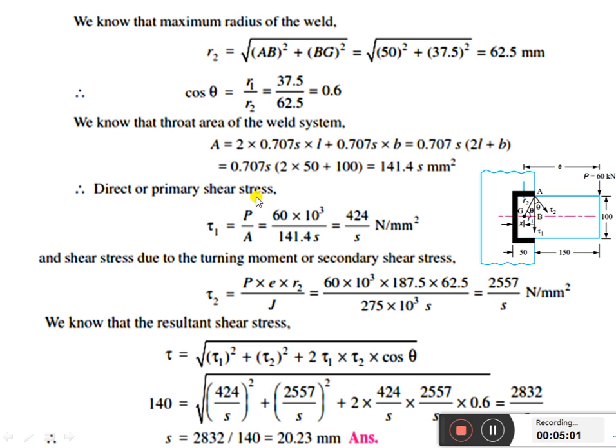The direct or primary shear stress τ₁ equals P by A. In terms of s, we will get τ₁ equals 424 divided by s Newton per mm².